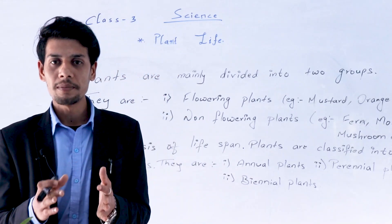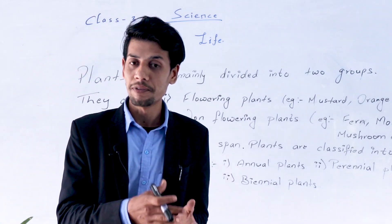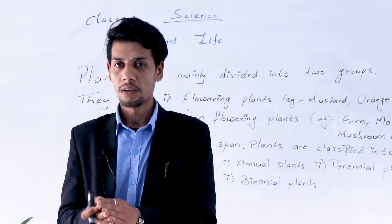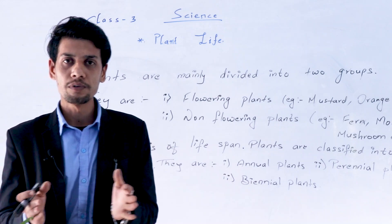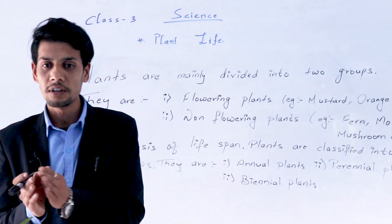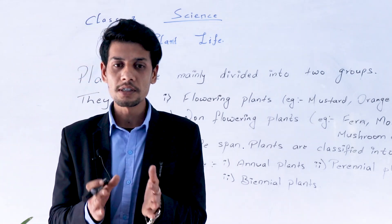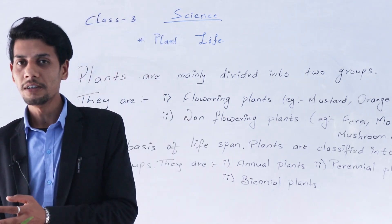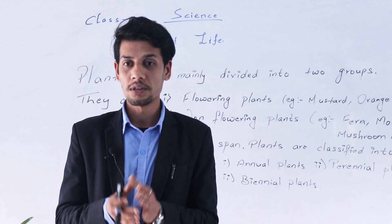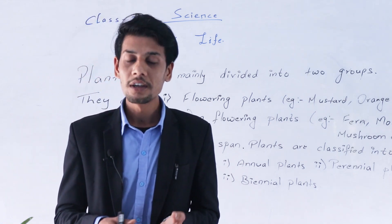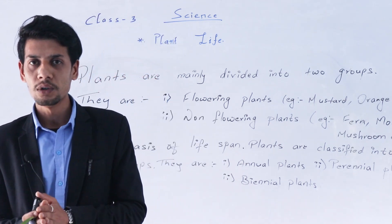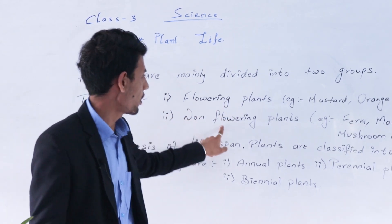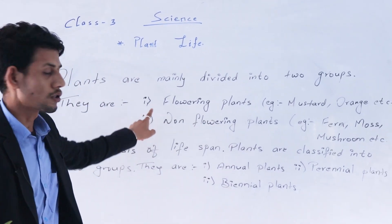Some plants are small, some are big, and they can also be compared as flowering and non-flowering. There are different types of plants. Just as animals are divided into different groups, plants are also divided into two groups: flowering plants and non-flowering plants.